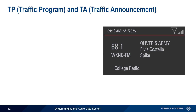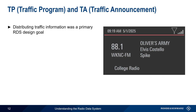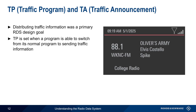Next, we'll discuss how RDS sends traffic information, which was one of the original RDS design goals. The TP, or Traffic Program bit, is used to indicate that a program is able to switch from its normal content to sending traffic information.